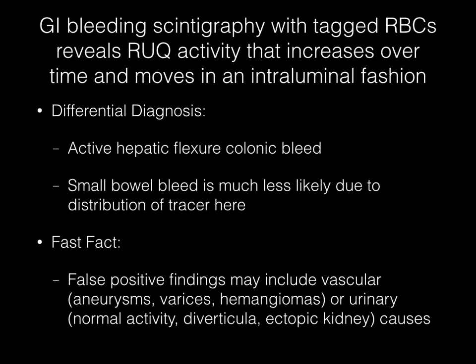This is a GI bleeding scintigraphy study with tagged red blood cells and reveals right upper quadrant activity that increases over time and moves in an intraluminal fashion. The differential diagnosis should primarily include active hepatic flexure colonic bleed. As a secondary consideration, small bowel bleed could be mentioned, although it is much less likely due to the distribution of tracer here.